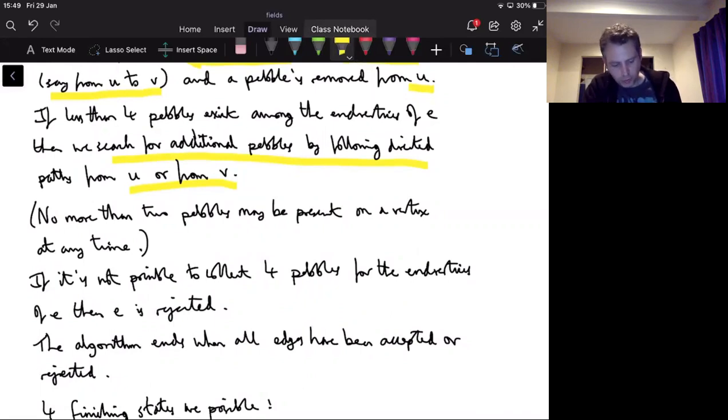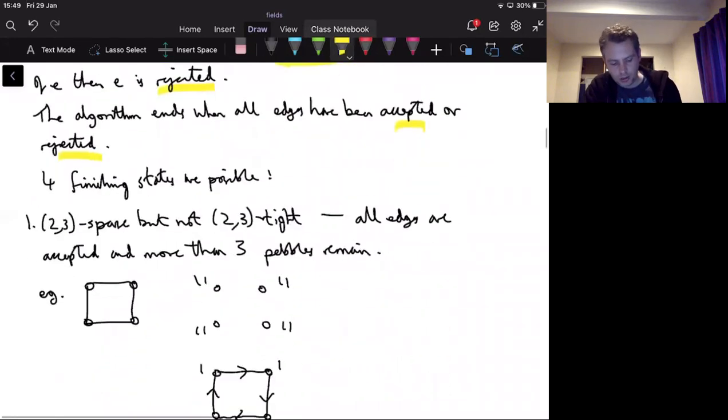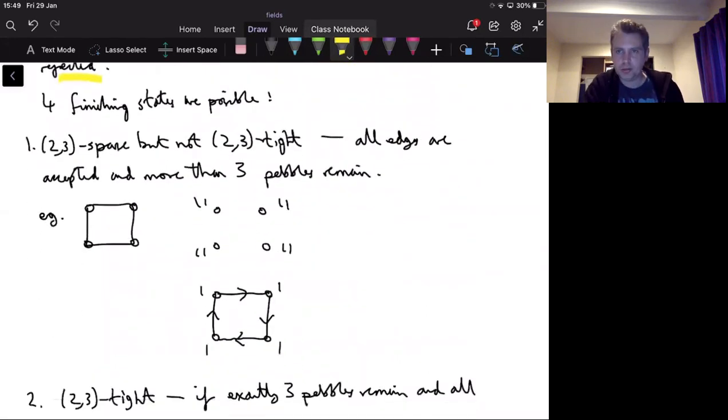And I guess that's all about accepting an edge. So you can keep searching and searching until you've run out of possible things to search. If you get to four, you go back and you accept it, and you direct the edge again and take a pebble away. But if it's not possible to get to four pebbles among the end vertices of some edge of your graph, then you reject the edge. And then after you've tested all edges and they've all been either accepted or rejected, the algorithm finishes. So I wanted to do some quick examples.